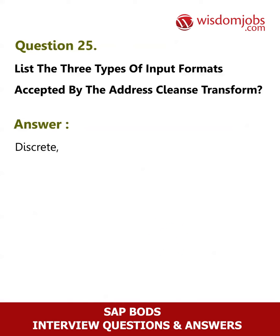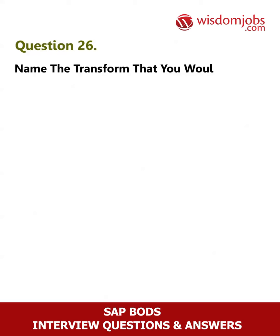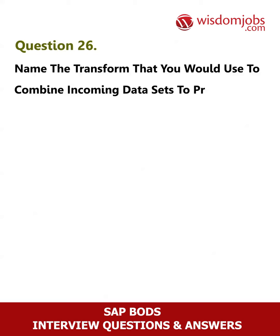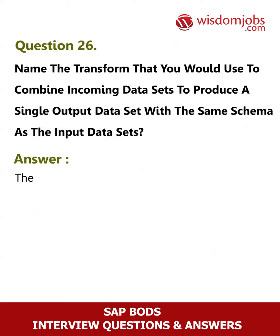Question 25: List the three types of input formats accepted by the address cleanse transform. Answer: Discrete, multi-line, and hybrid. Question 26: Name the transform that you would use to combine incoming data sets to produce a single output data set with the same schema as the input data sets. Answer: The merge transform.